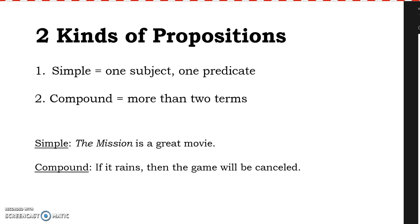In the simple proposition, you have one subject — 'the Mission' — and one predicate — 'is a great movie.' In the compound proposition, you have more than two terms: you have 'rains,' then 'game,' and 'will be cancelled.' You have three elements in this conditional proposition, and only two terms working in the simple proposition, 'The Mission is a great movie.'